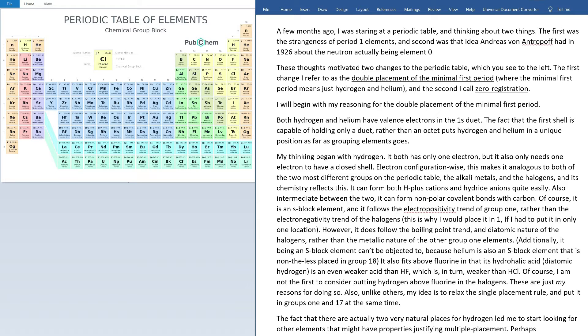These thoughts motivated two changes to the periodic table which you see to the left. The first change I refer to as the double placement of the minimal first period, whereby the minimal first period I just mean hydrogen and helium, and the second I dubbed zero registration. I'll begin with my reasoning for the double placement of the minimal first period.